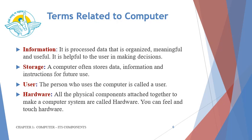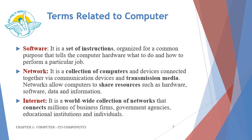Who is the user? The person who uses the computer is called a user. What do you understand by the term hardware? All the physical components attached together to make a computer system are called hardware. You can feel and touch the hardware. The next related term is software. It is nothing but the set of instructions organized for a common purpose that tells computer hardware what to do and how to perform a particular job. What is network? It is a collection of computers and devices connected together via communication devices and transmission media. Networks allow computers to share resources such as hardware, software, data, and information.